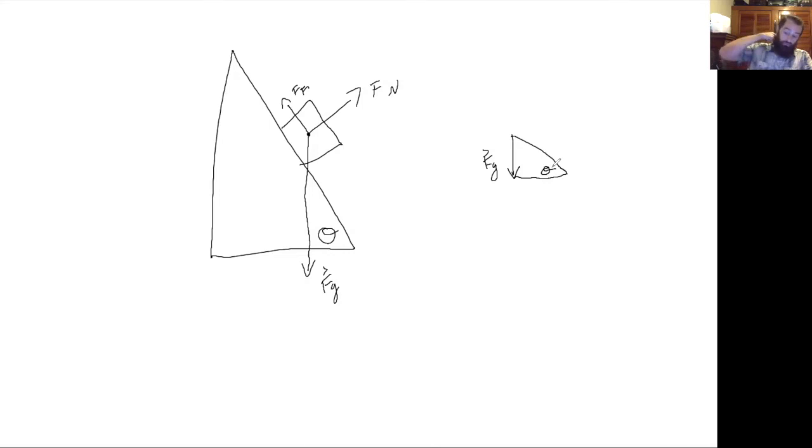Now, when you want to break a vector into components, the vector needs to be on the hypotenuse of whatever triangle you're trying to make.